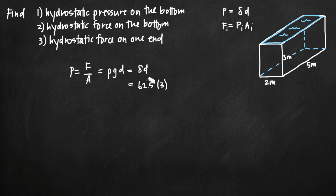The bottom of our tank is 3 meters deep and so we have 3 here. So the pressure at the bottom, the hydrostatic pressure at the bottom of our tank is 187.5 and this is pounds per square foot.